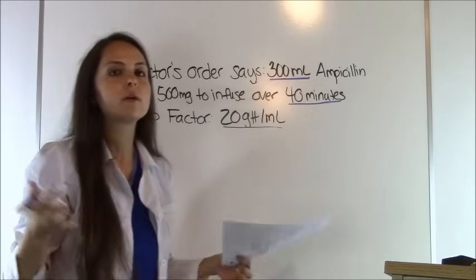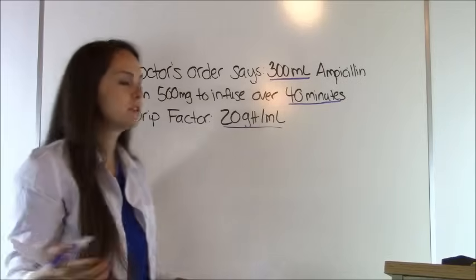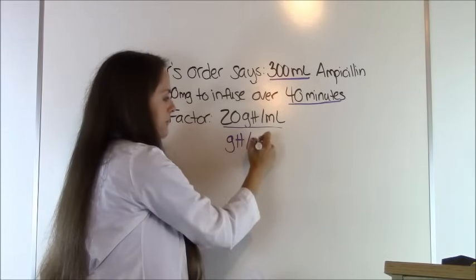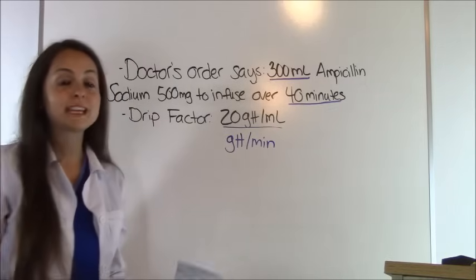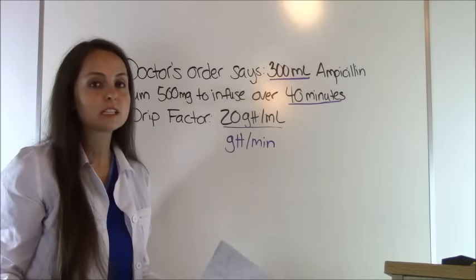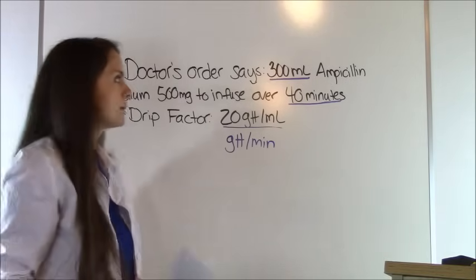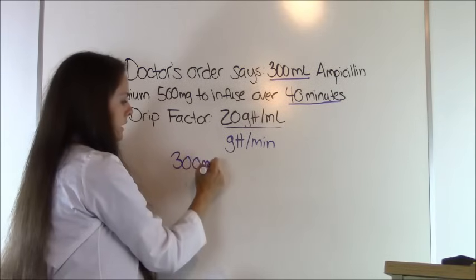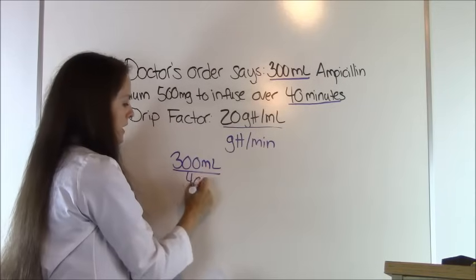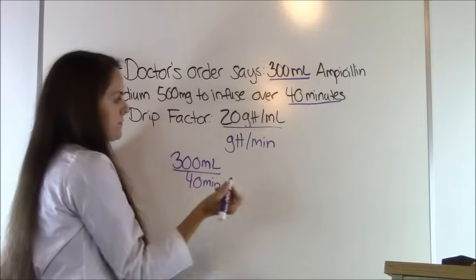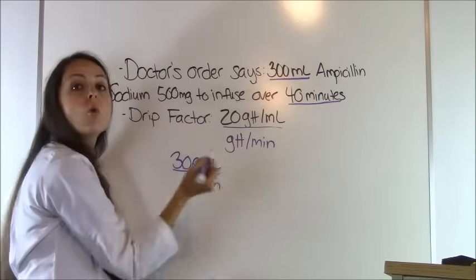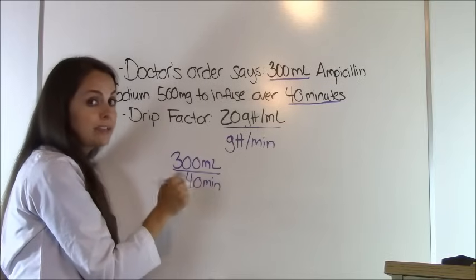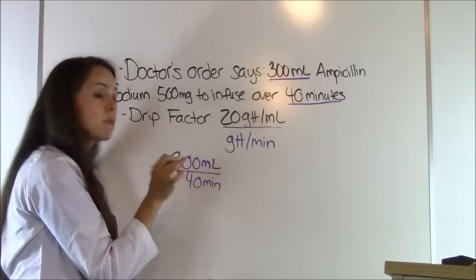We're trying to get to drops per minute. We'll set it up in dimensional analysis, starting with what the doctor ordered: 300 milliliters over 40 minutes. We're already in minutes, so we don't have to convert from hours like we did in the last problem.